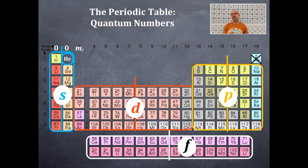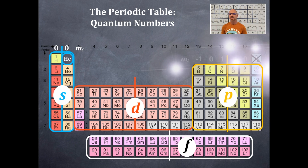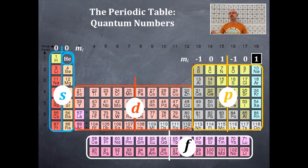Looking at the S-type orbitals, I've written down the M sub L values — that would be zero. Now for the P-type orbitals, the M sub L values are like a number line representing the XYZ axis planes: PX, PY, PZ, corresponding to negative one, zero, and one. That set is then repeated again: negative one, zero, and one.